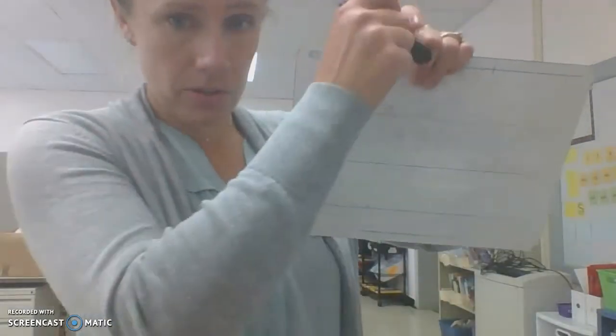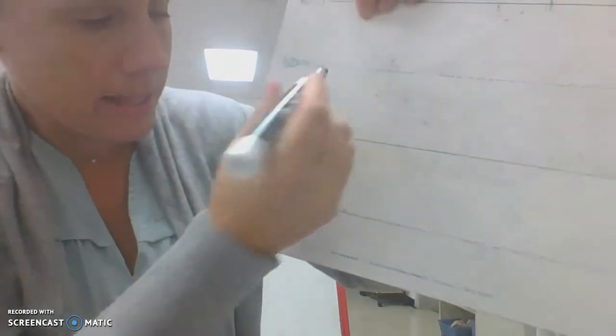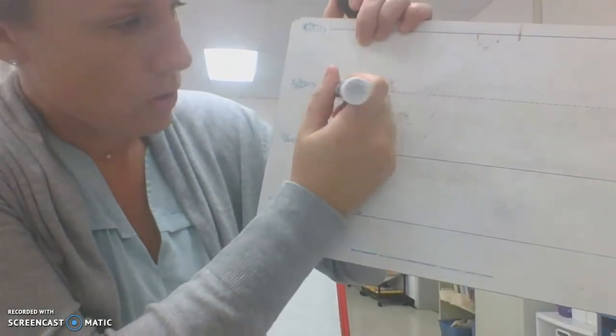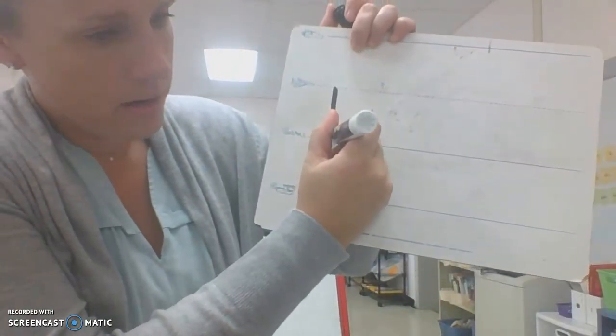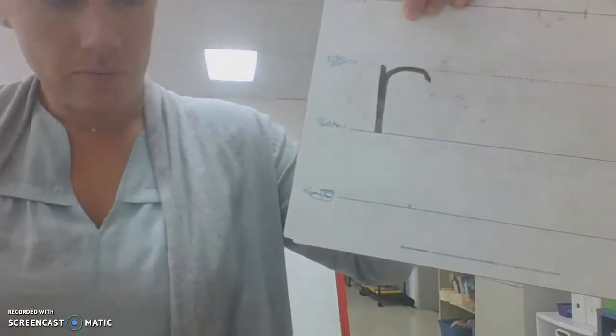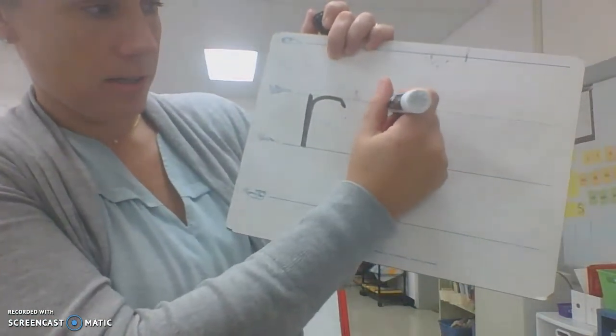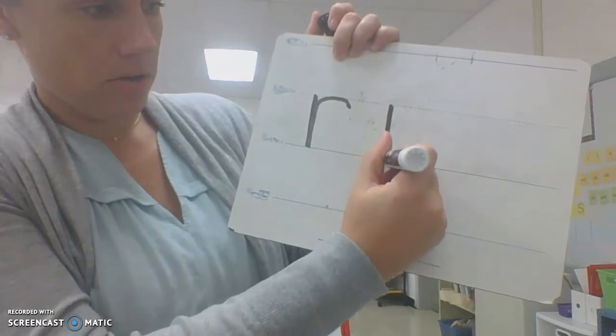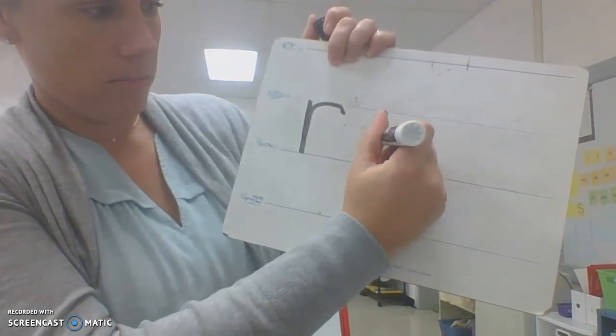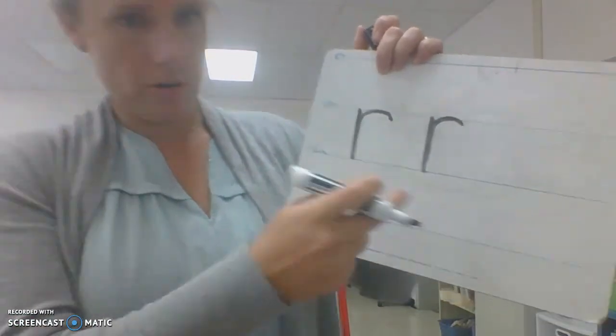So R is also a plain line letter, so we know it starts on the plain line. You go down to the grass line, trace back up to the plain line, and make a little curve. R, rat, er. Watch me again. Point to the plain line, go down to the grass line, trace back up to the plain line, and make a curve. R, rat, er.